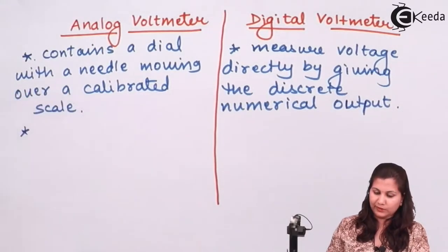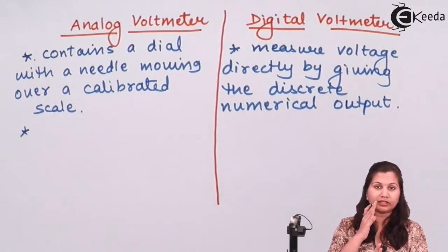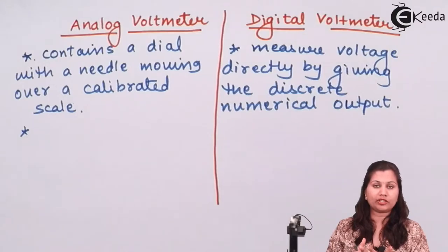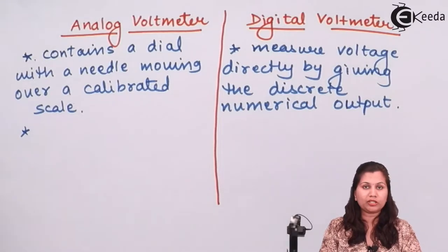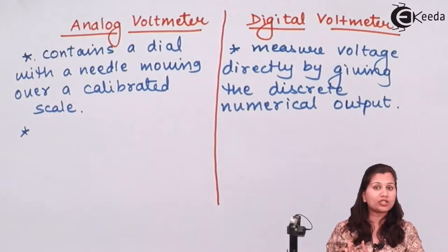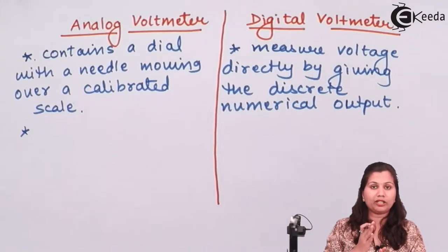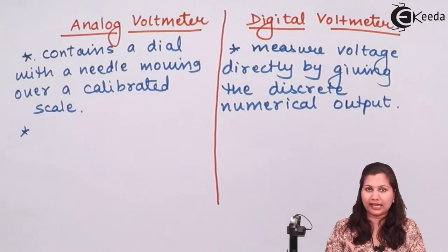In the analog voltmeter, the observer has to read where the needle is pointing over the calibrated scale. So there may be errors due to wrong observation. Whereas in the digital voltmeter, because it is directly providing us the reading — like if the voltage is 21.1 volts, we can directly read it — there are less chances of errors. In the analog voltmeter, the observer has to see exactly where the pointer coincides with the scale divisions, so errors can occur.